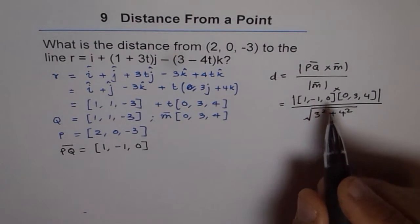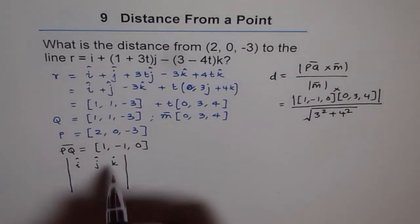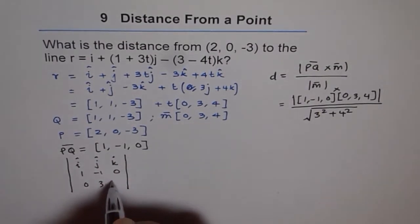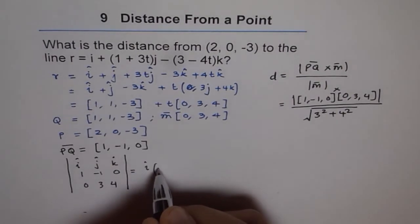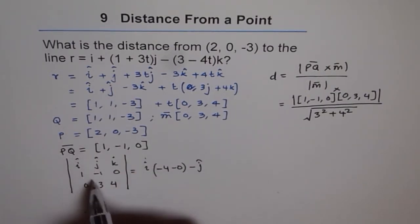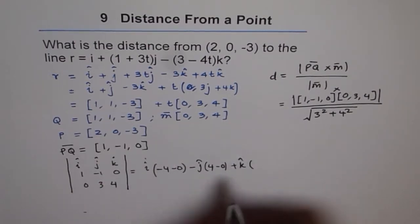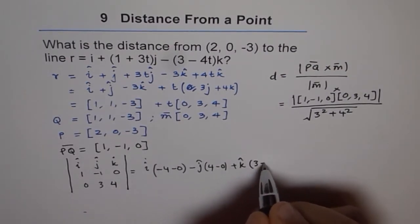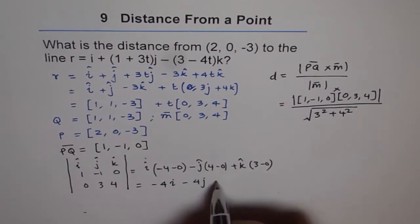So you can find the cross product, and let me use the matrix here to find cross product: i, j, k. And my PQ is (1, -1, 0), and my line is (0, 3, 4). So the cross product will be i times (-1 × 4, which is -4, minus 0), minus j times (1 × 4 = 4, minus 0), plus k times (3 - 0). So it's just 3 minus 0. Which is basically -4i - 4j + 3k. Now, so that is the cross product. This is our PQ cross m. This is what is equal to this.